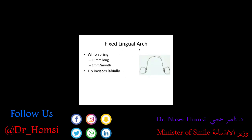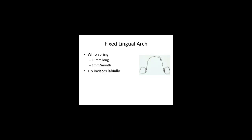Now let's talk about a fixed lingual arch. It's banded to the molars and has a lingual wire with a whip spring. The whip spring is about 15 millimeters long with no helices. You activate it backwards and it pushes the entire incisor complex facially - about one millimeter per month. It's important to note that with these appliances, they're single point contacts, not edgewise. They're not braces with wires contacting at multiple points; it's just one piece of metal touching one point on the tooth. So this is all tipping - mostly uncontrolled tipping - which is okay since we're only fixing a couple of millimeters.